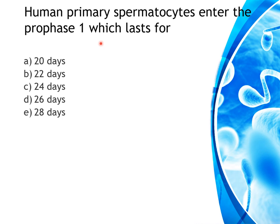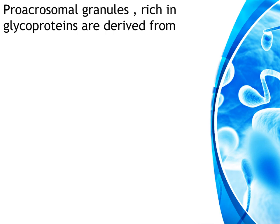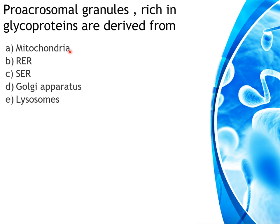Human primary spermatocytes enter prophase 1, which lasts for 22 days. Pro-acrosomal granules rich in glycoprotein are derived from — the options are mitochondria, rough endoplasmic reticulum, smooth endoplasmic reticulum, Golgi apparatus, or lysosomes.